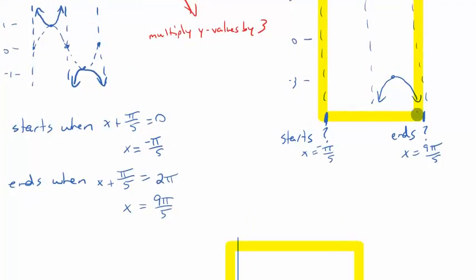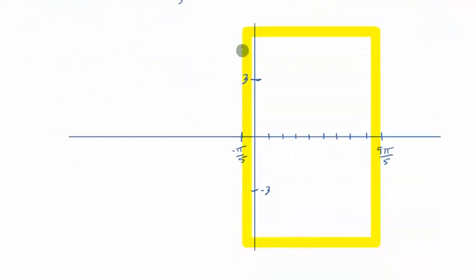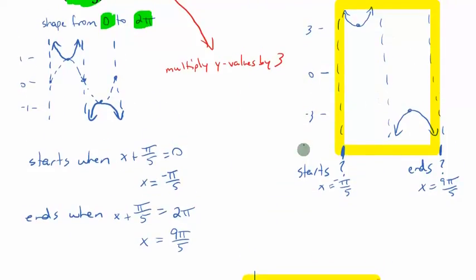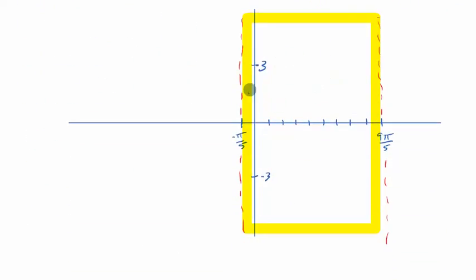My cycle, the beginning of my yellow box, starts and ends with an asymptote. So I need to mimic that. At negative π/5, where my graph starts, I need to draw an asymptote. And because this is a complete cycle, I know the very end of this cycle also has an asymptote. Then I go to the middle. In the middle of my cycle, I have another asymptote. So where's the middle?